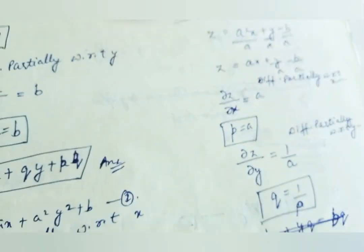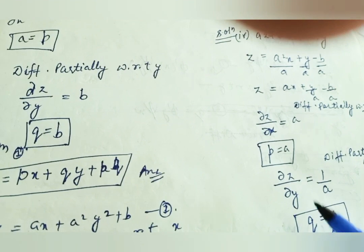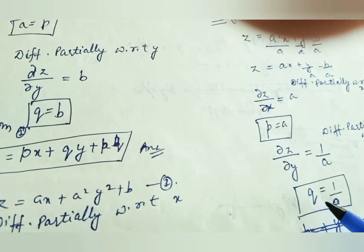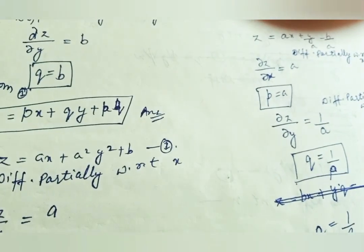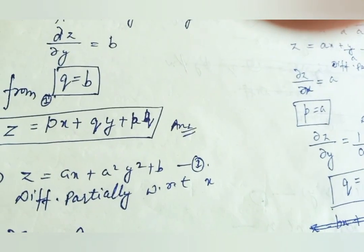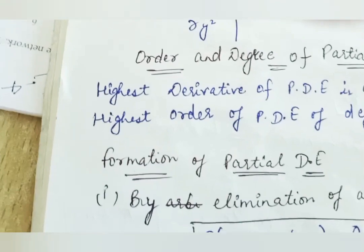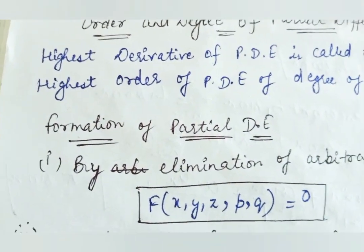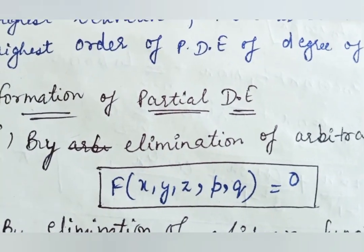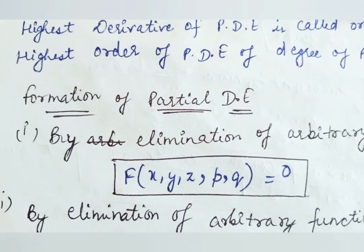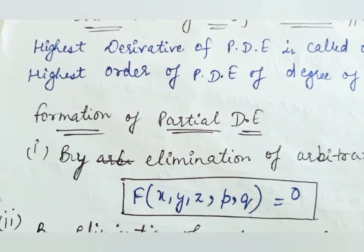There should be a here. Taking the value of a and substituting p, we get the value of a in terms of p. Substituting p here and cross-multiplying gives p × q = 1. This is the elementary method of eliminating arbitrary constants — the first method of formation. Given any equation, you convert it into the form of a partial differential equation by eliminating arbitrary constants. Thank you, we will meet in the next lecture.